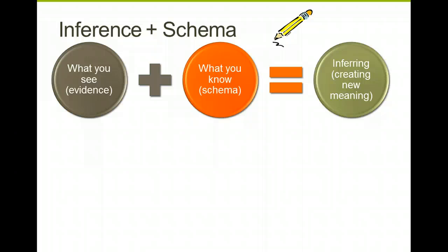There's a big word for this: schema. It could be the background knowledge you've researched and understood, your own personal experiences, or maybe reading another book and making text-to-text connections. All of that is combined to get your inference, which creates a new meaning and understanding of the text.